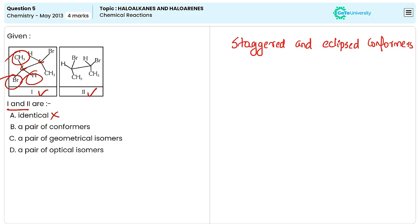At the same time, in case of a staggered conformation, the bonds or groups attached to the adjacent carbon atoms are positioned such that they are as far apart from each other as possible. So we can say these two compounds are staggered and eclipsed conformers of a particular molecule. So option B is the correct answer.